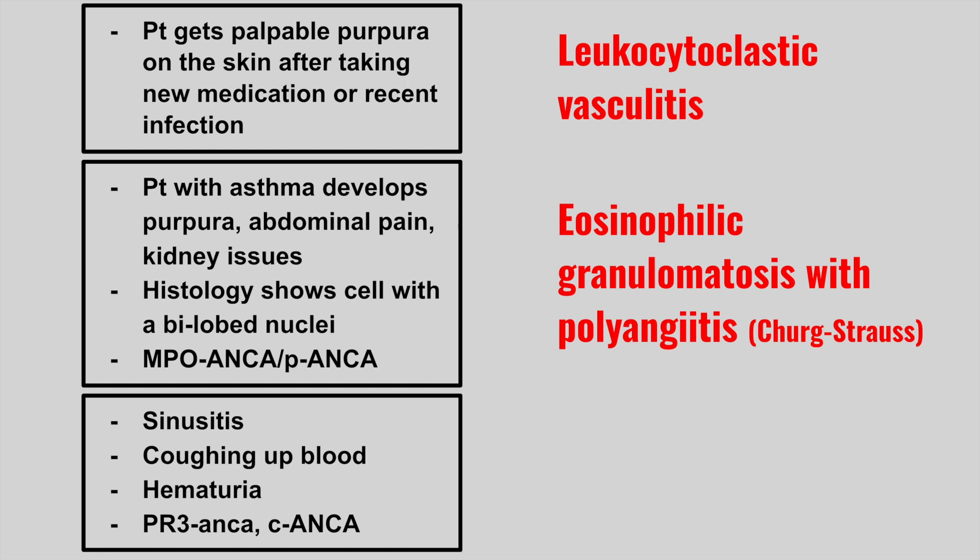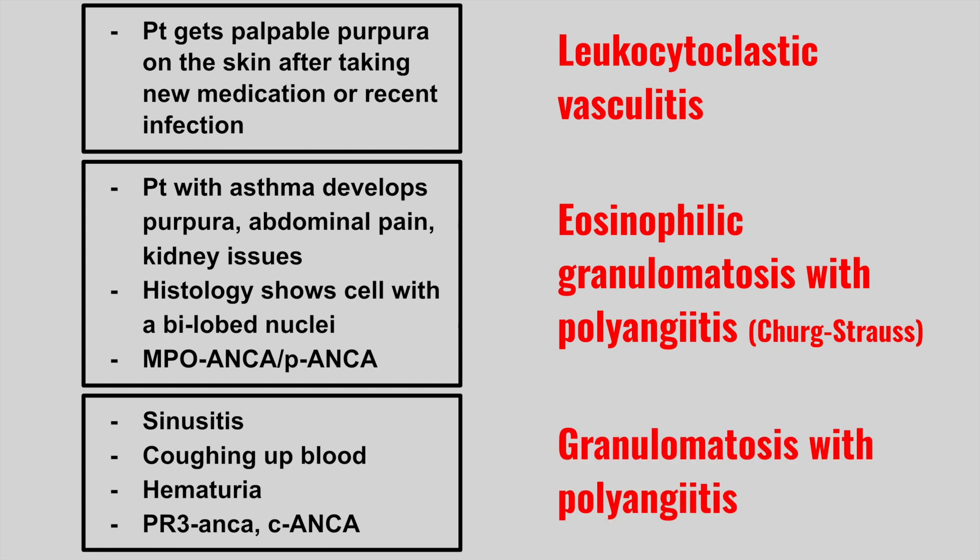Next, we have a patient with sinusitis who is coughing up blood and has hematuria, with PR3-ANCA, C-ANCA positive. So this is granulomatosis with polyangiitis. Remember, there is a triad of upper respiratory, lower respiratory, and kidney problems, and this is another condition with granulomas.